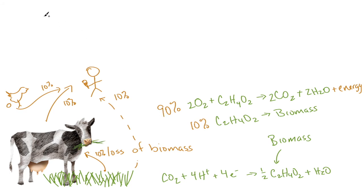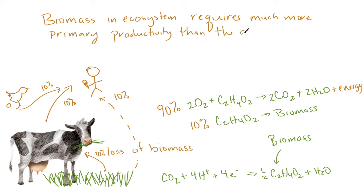So to have very much biomass in an ecosystem requires much more primary productivity than the actual mass that you would measure because a lot of it gets consumed as this energy that actually maintains organisms.